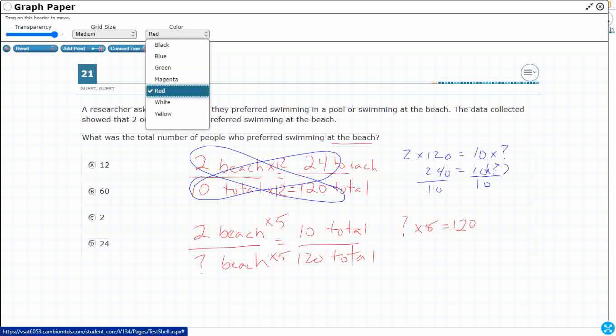Or you could also do a little bit of cross multiplication here. But look, you're going to end up with the same thing. 2 times 120 equals that unknown times 10. So it ends up being the same thing. That's why it works both ways.